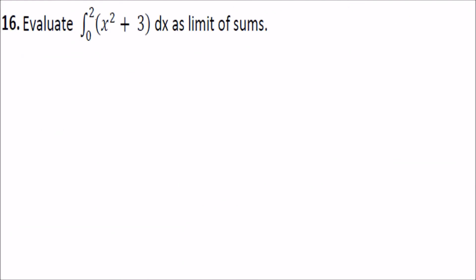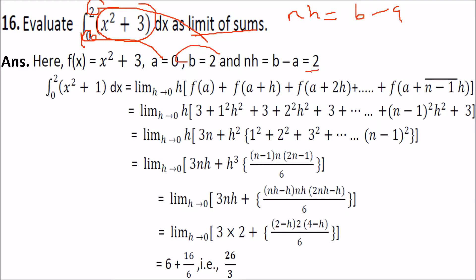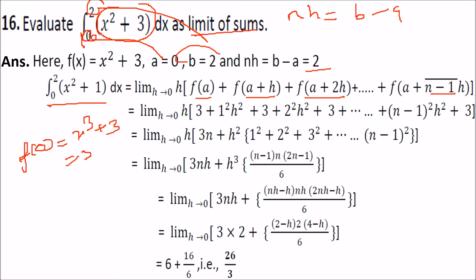Evaluate the integral from 0 to 2 of (x² + 3) dx as a limit of sum. Here f(x) equals x² plus 3, a equals 0, b equals 2, and nh equals b minus a equals 2. We know that the limit of sum is given by limit h tends to 0 of h times [f(a) + f(a+h) + f(a+2h) + ... + f(a+(n-1)h)]. Starting with f(0) = 0² + 3 = 3.